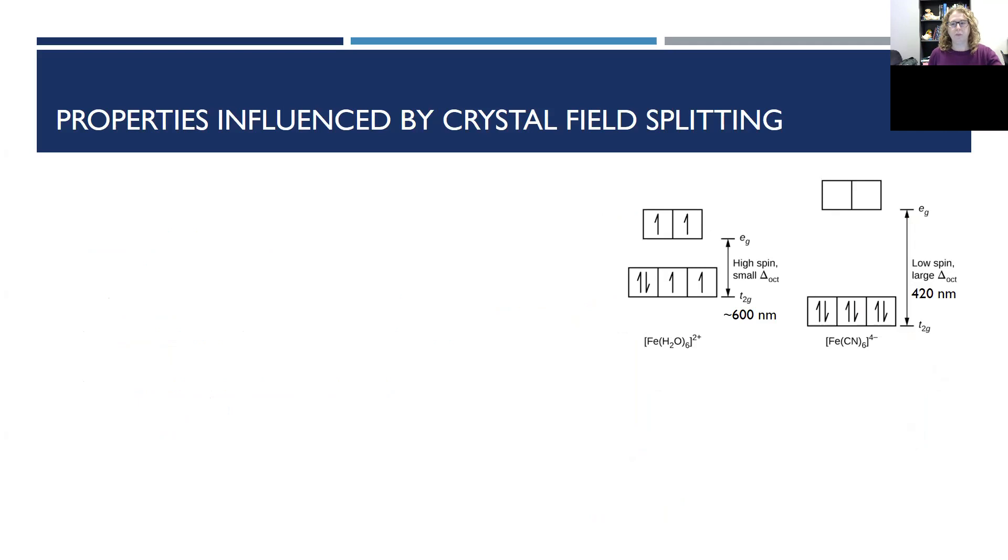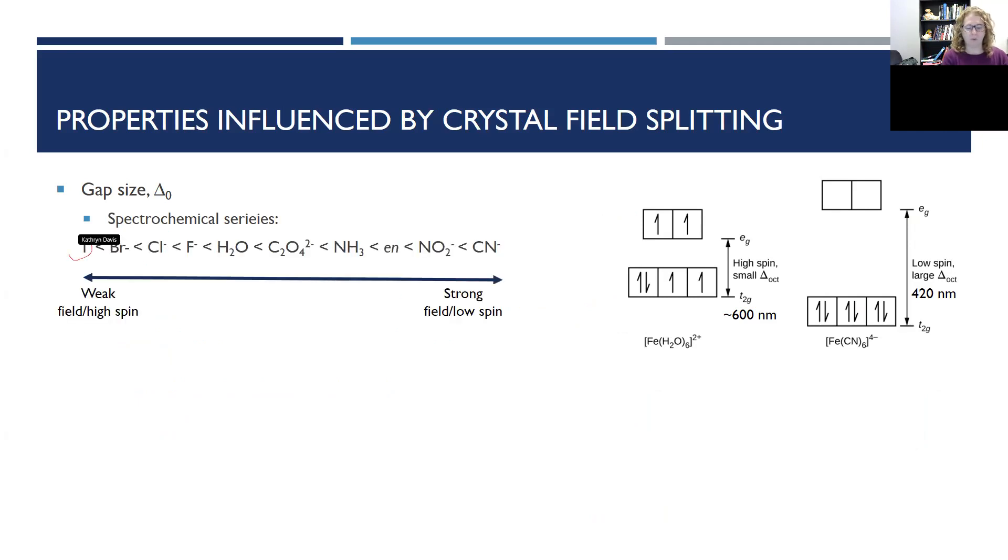So here's some properties that are influenced by crystal field theory. First off, of course, gap size. So like I was saying, the ligand matters. So whether I'm an iodide or water or a cyanide matters to how big this gap gets. Things on the left are called weak field ligands and they have a small delta. Things on the right are strong field ligands. They have a high delta. I'll tell you which is which. I just wanted you to be aware that this exists.